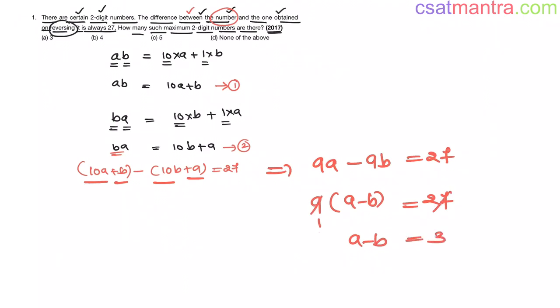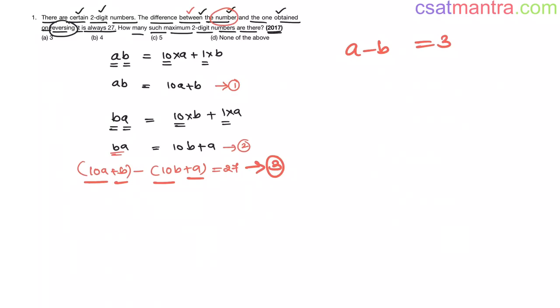From this equation we got A minus B equals 3. Now let us look at the possibilities of A and B so that A minus B equals 3 my friends.